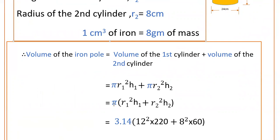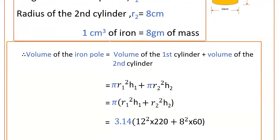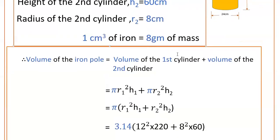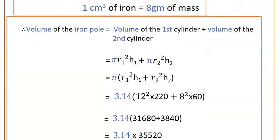Substitute the values: π value is 3.14, r₁ and h₁ are 12 and 220, so 12² × 220, plus r₂ and h₂ are 8 and 60, so 8² × 60.